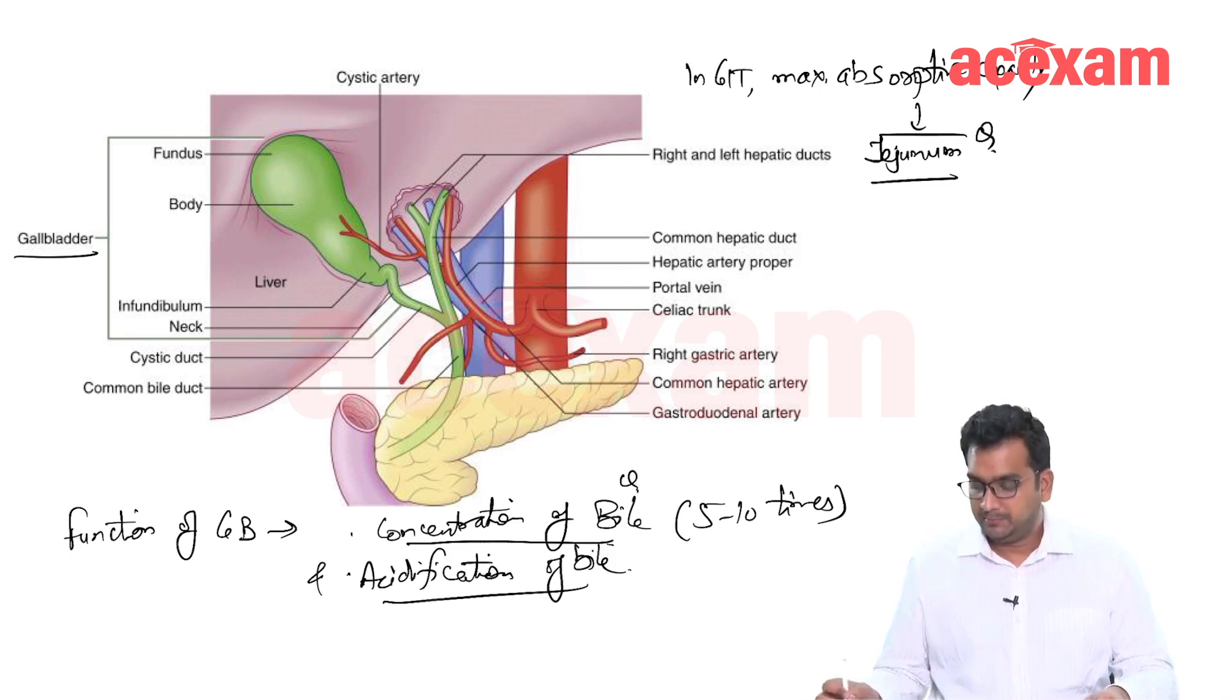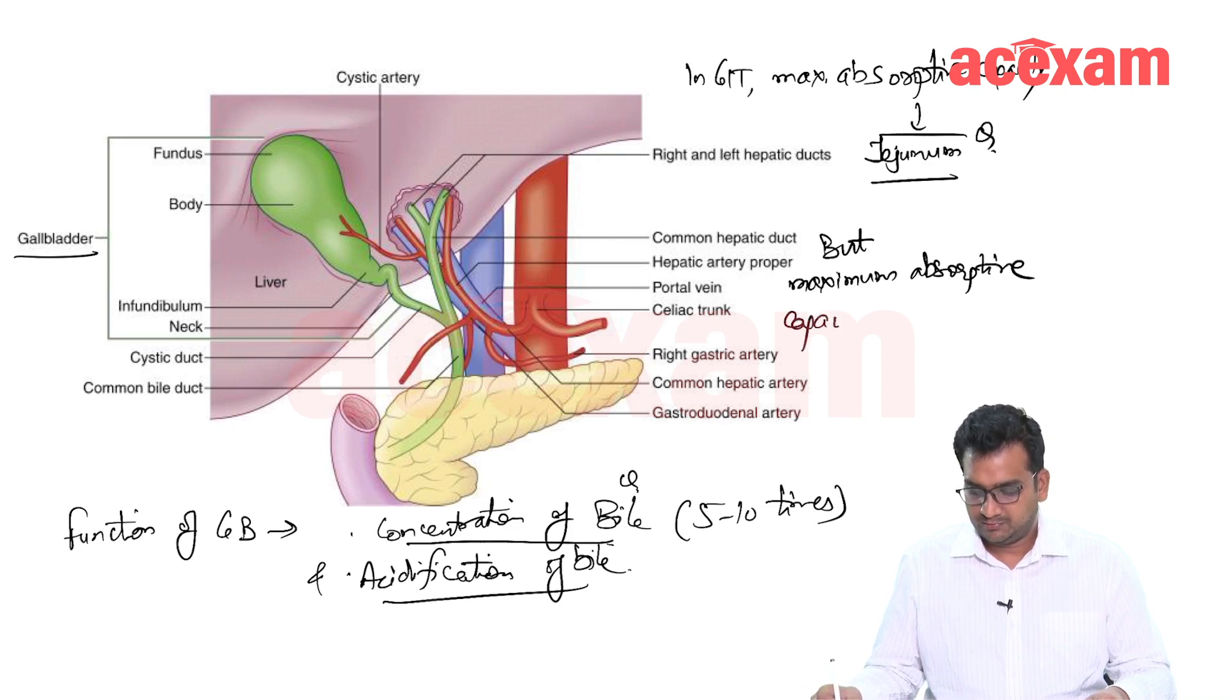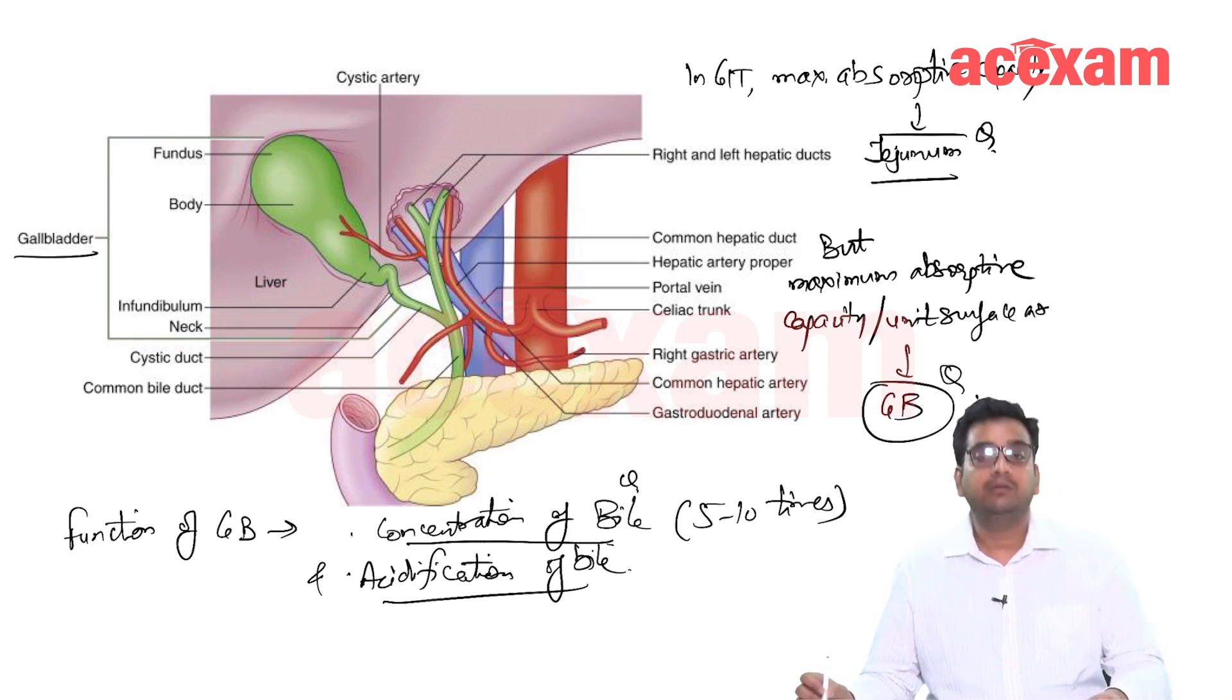But maximum absorptive capacity per unit surface area is present in gallbladder.